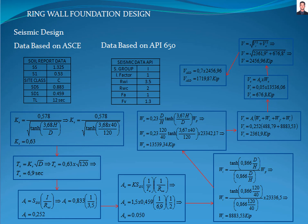The American Petroleum Institute 650 standard works with allowable stress design, which means that this value must be converted to work properly with the American Petroleum Institute 650 standard. This is done by multiplying the result by 0.7. The final value for the base shear is 1,719.87 kilopounds.